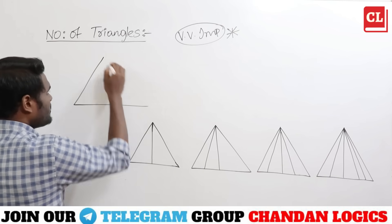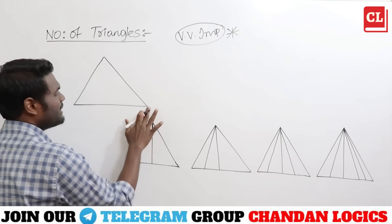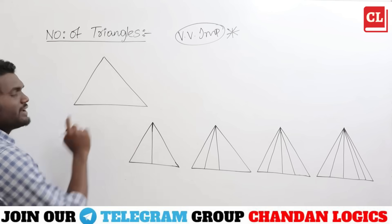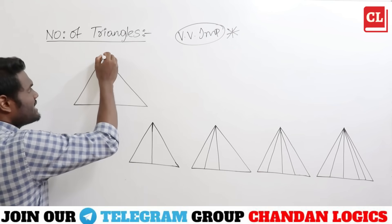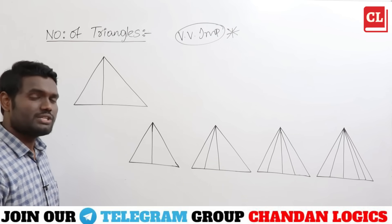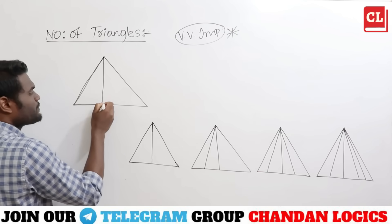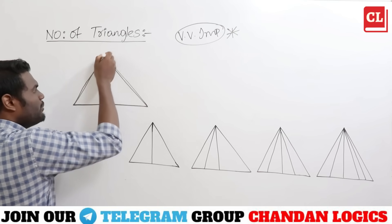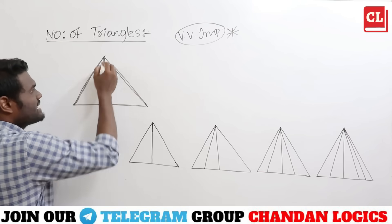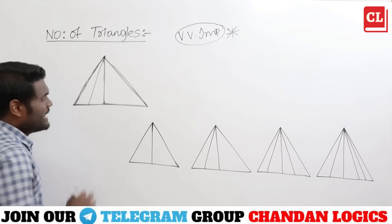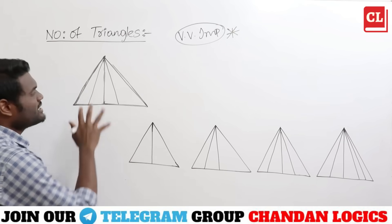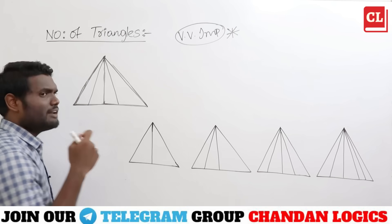Look at this particular figure and say how many triangles you have. In the basic figure you have one triangle. If the figure has two small triangles, you need a total of three triangles — this is one triangle, this is one more triangle, and both combined together make one more triangle. So total you have three triangles. If it is in the next formation, total you'll have six triangles. And in the one after that, you'll have a total of 10 triangles.